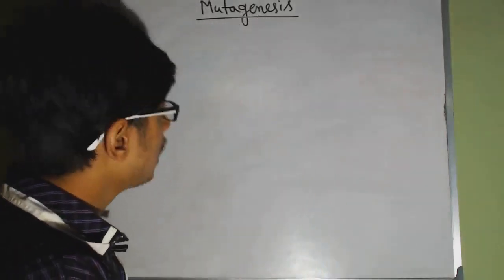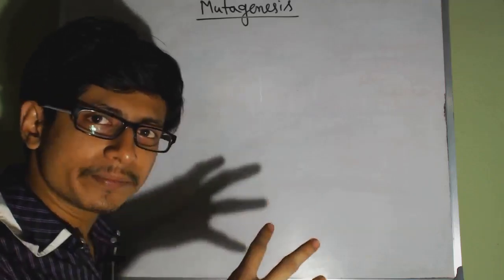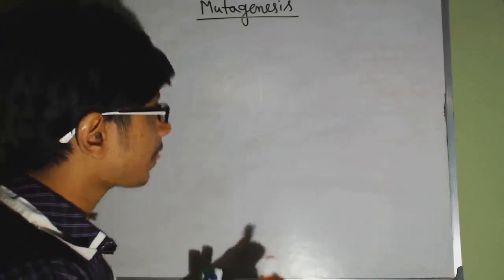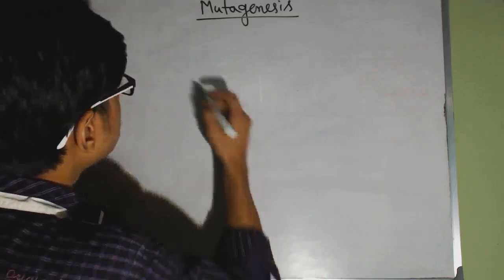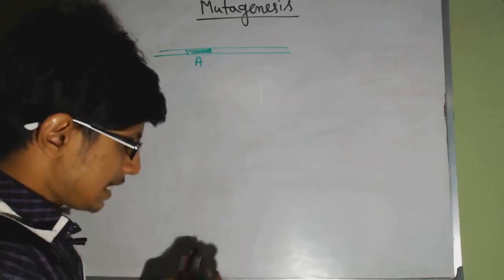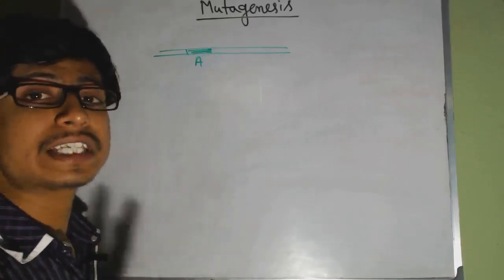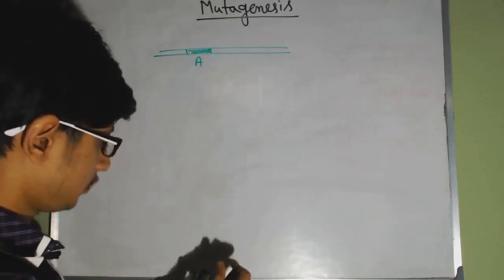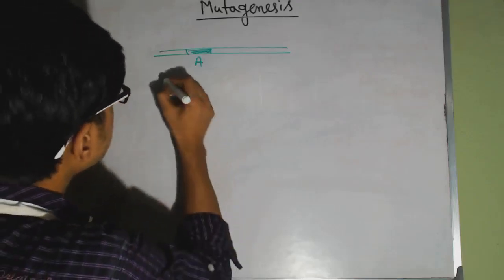In mutagenesis, the idea is to create a mutation or generate a mutation in the organism to see the effect. Let's say there is a DNA, in that DNA there is gene A. We do not know the function of gene A. So what we will do, we mutate this gene A so that it becomes non-functional sometimes.